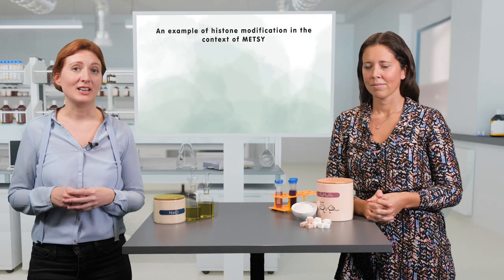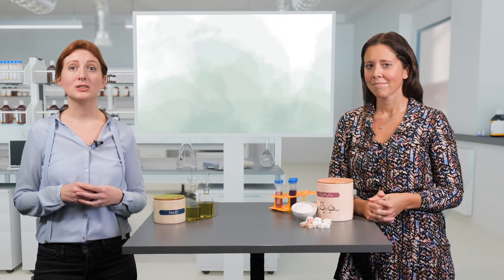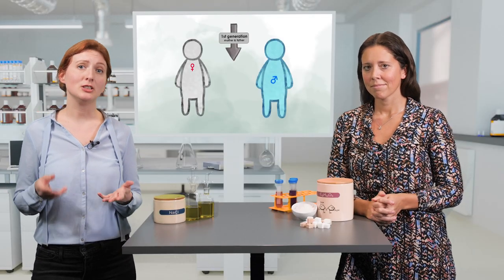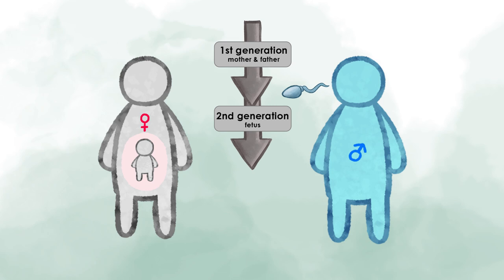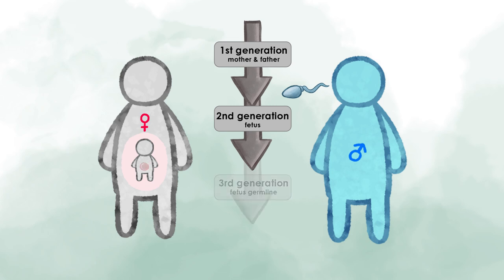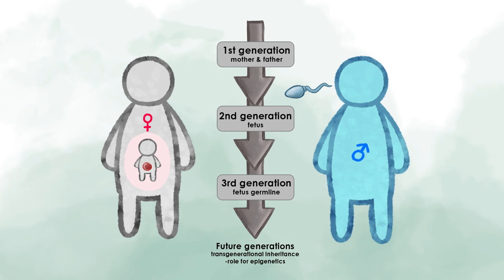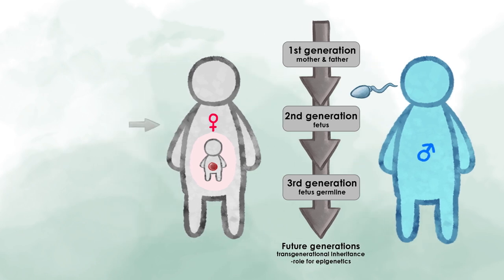These modifications are quite special because they could be inherited and depend on what your parents or your grandparents experienced. Also, during your whole life, including your time as an embryo, you can acquire those epigenetic marks. They help you and your children to adapt to the environment.